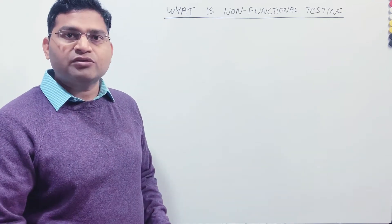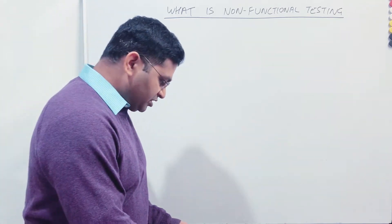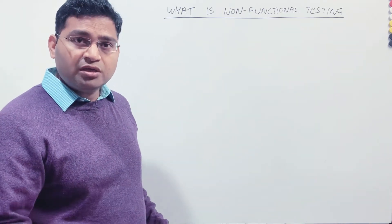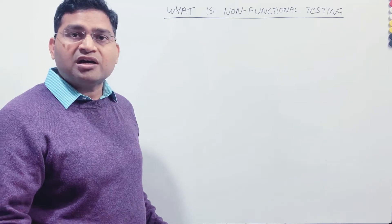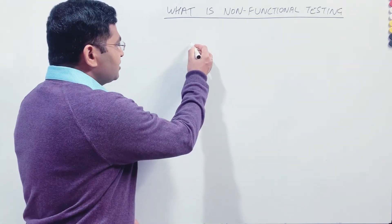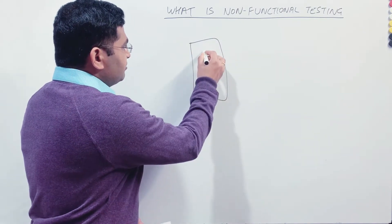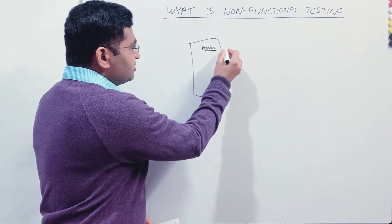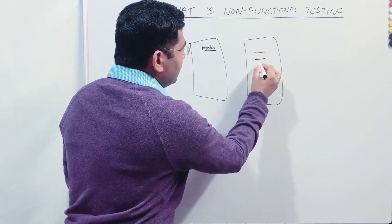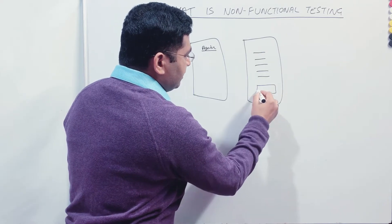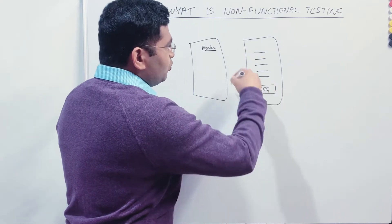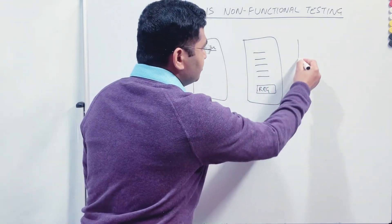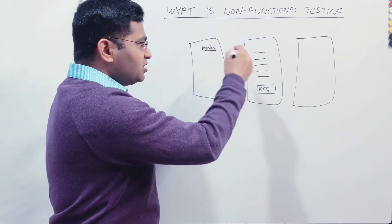When we talk about non-functional testing, non-functional testing tests the responsiveness and stability of the application. When you are testing how the application is responding or how stable the application is, those are the non-functional aspects. For example, on a registration page of an e-commerce website, when I click on the register link, it will open the register form where I fill in details like first name, last name, and then click on the register button. Once I click on register, my details should be saved and I should be redirected to the dashboard page. This is the functional aspect.